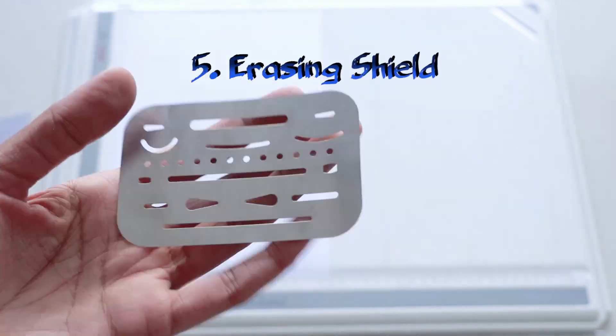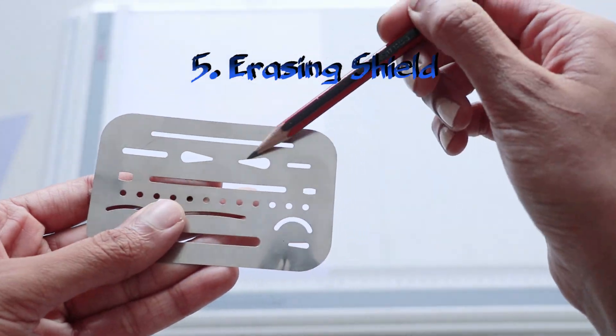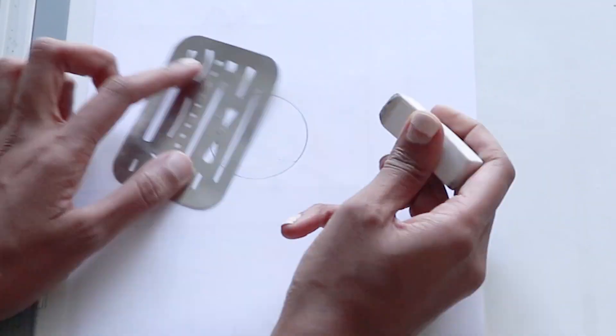Don't worry if it's a little untidy, you can use your erasing shield to erase any smudges that you made. Place it down and erase away using the pattern that fits.